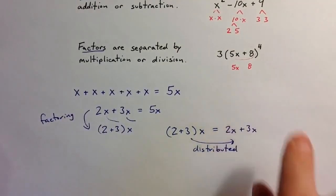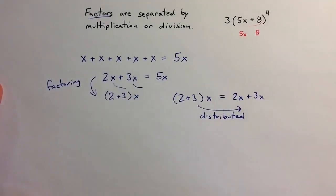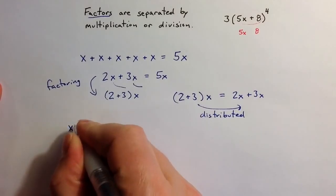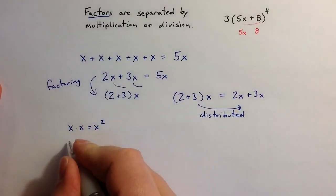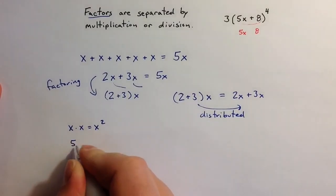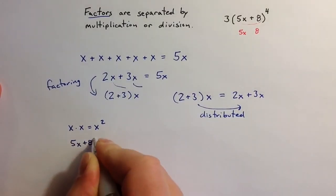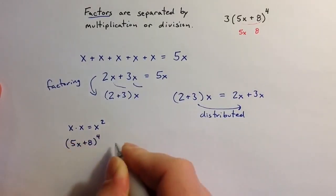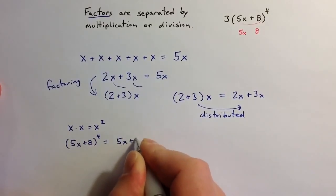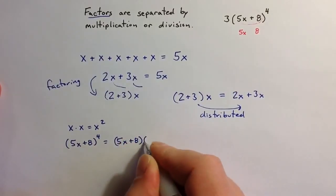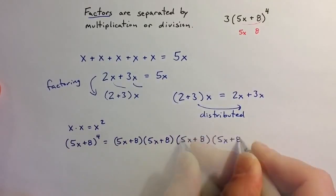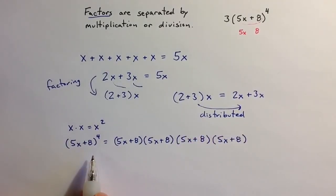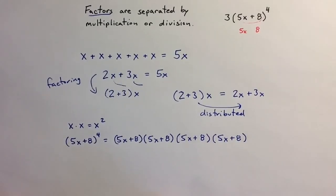Exponents are a summary of multiplication. x times x can be written as x squared. Similarly, the expression (5x plus 8) to the fourth power means (5x plus 8) times itself four times. So that exponent of 4 is really a summary of (5x plus 8) multiplied by itself four times.